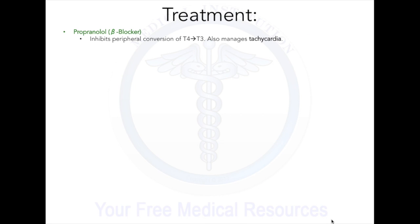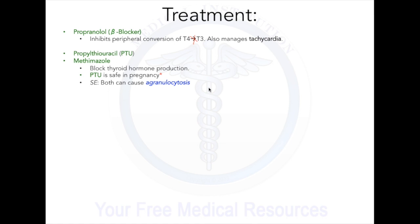There are different ways to treat Graves' disease. One is propranolol, a beta blocker that inhibits the conversion of T4 to T3 and can also treat tachycardia. Another approach is PTU or Methimazole, which both inhibit thyroid hormone production. PTU can also be used in pregnancy. An important side effect of both drugs is agranulocytosis — a reduction in WBC count making patients prone to infection — so WBC count must be monitored every few weeks.